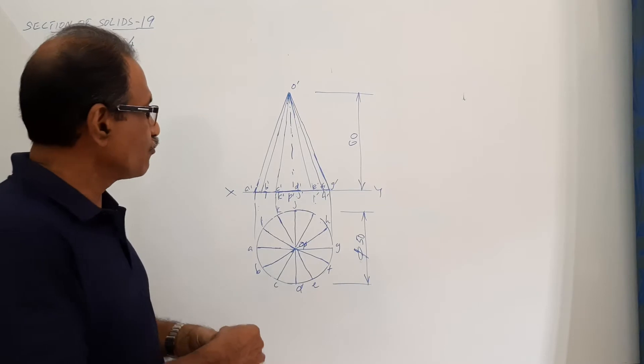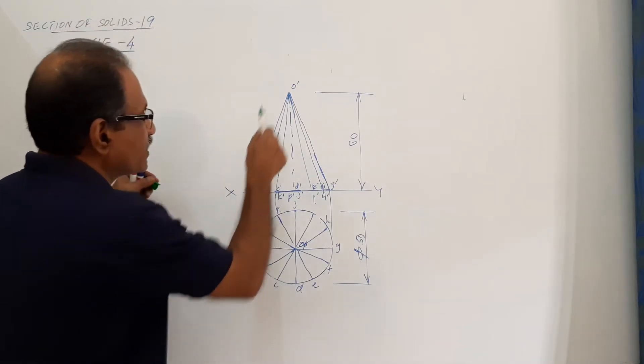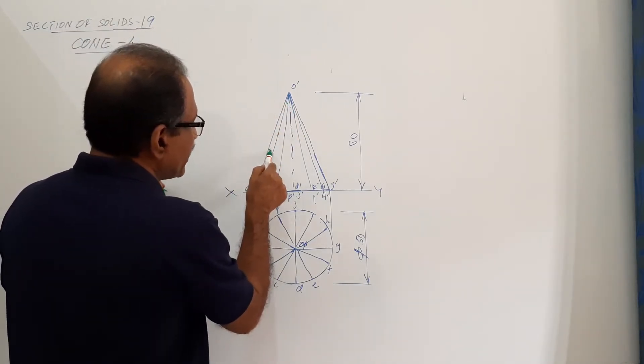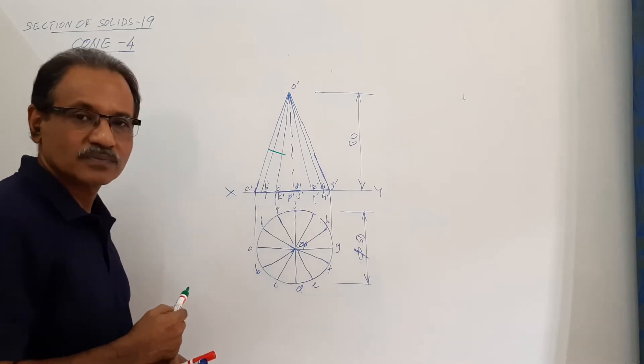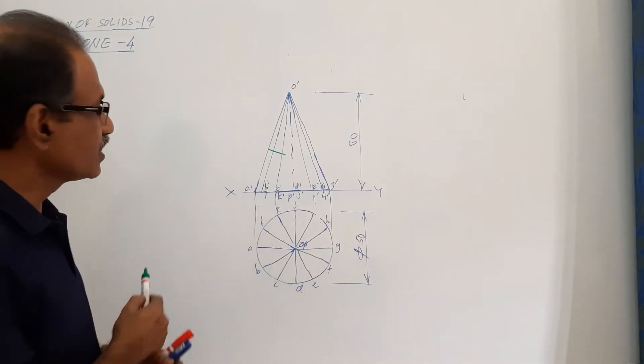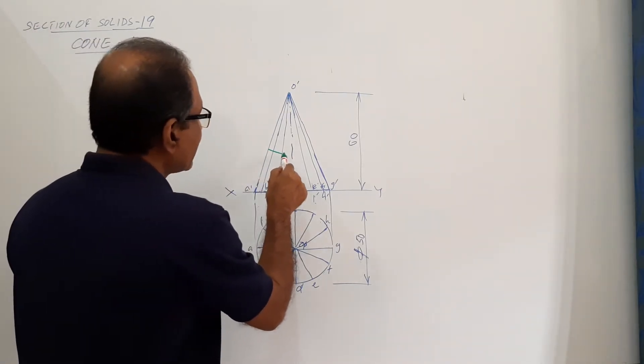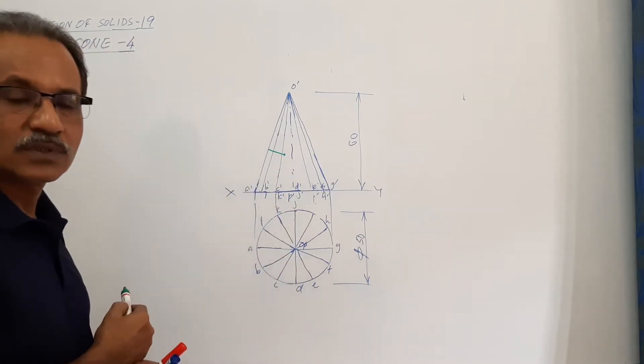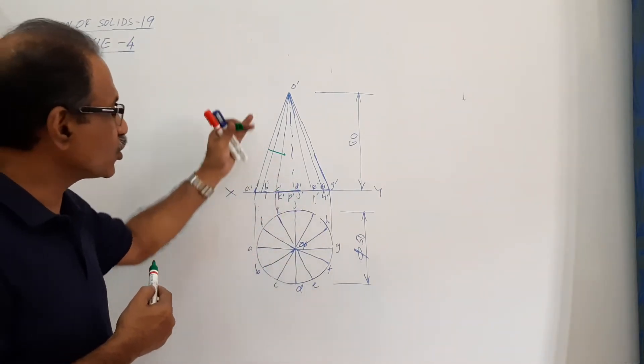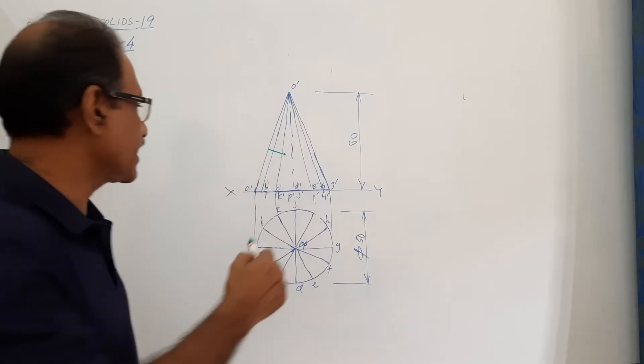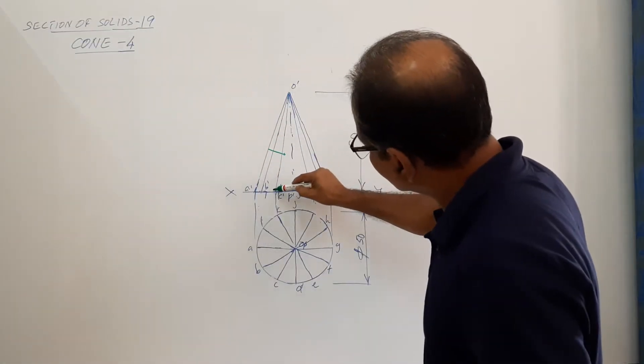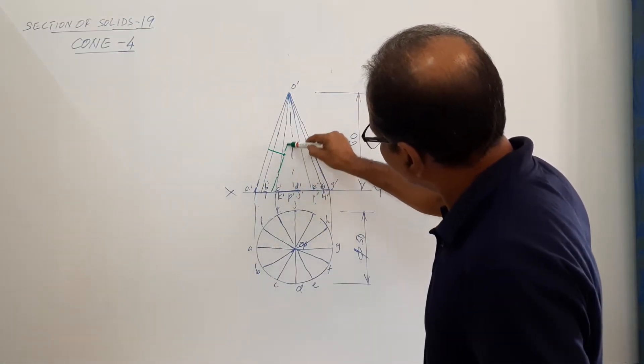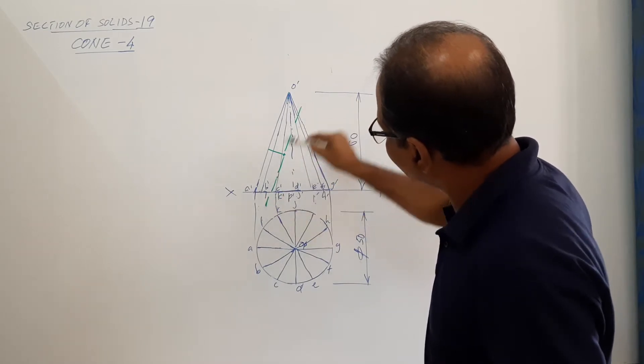What you have to do: First of all, take any point on the generator, draw a perpendicular. On that measure 10mm. Through that point, draw a cutting plane parallel to the end generator. This is the cutting plane.